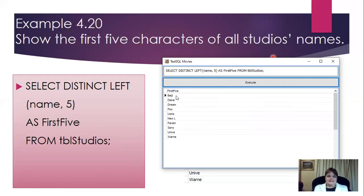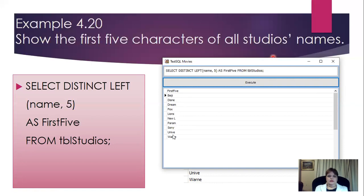The results show all the distinct studio entries but limited to the first five characters. So this would be Disney, DreamWorks, there's Paramount, there's Universal, Warner Brothers — only the first five characters of each. Now I'd like you to go to Activity 4.14. This time you're going to create the following queries using string functions. Make sure to give each calculated field a relevant name.